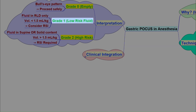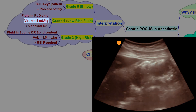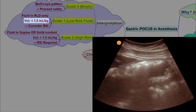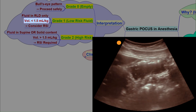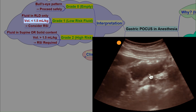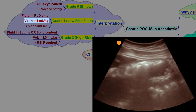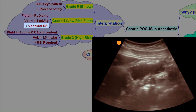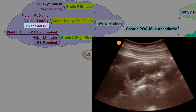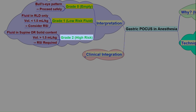Grade one suggests a small volume of clear fluid — we only see it after we roll the patient into the right lateral decubitus position. If the calculated volume is less than 1.5 ml per kg, we classify this as low risk. Here, the decision is to consider rapid sequence induction, depending on the clinical context.